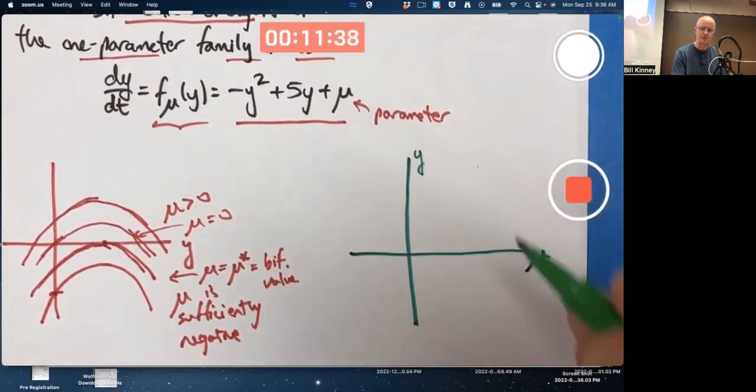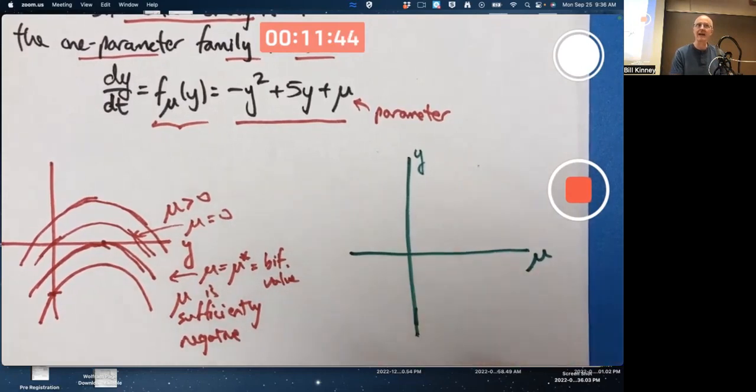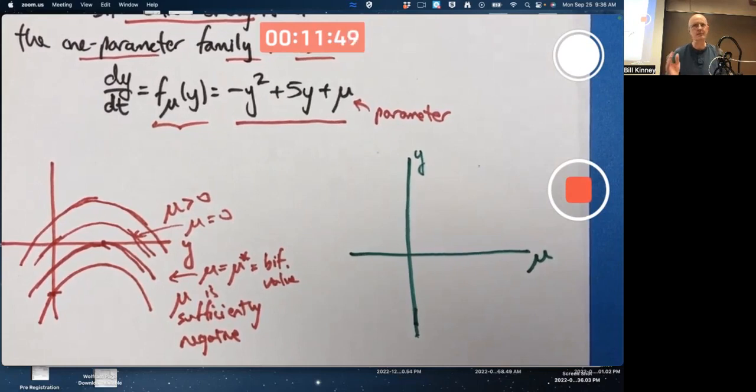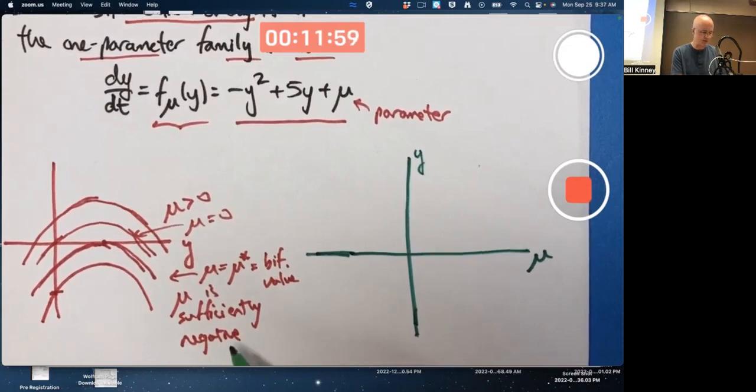I'll call this a y-axis. I'm doing something different than I did last week. I'm drawing an actual plane here labeled with mu and y because I'm ultimately trying to make a bifurcation diagram, which is a little bit more than just finding phase lines, more than what I told you to do.